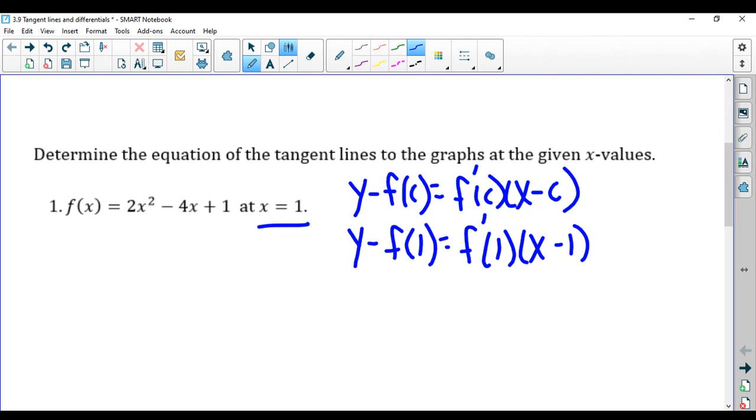Now we just have to figure out what f of 1 is and f prime of 1 is. So f of 1 is you plug in 1 to this function. So it's 2 times 1 minus 4 times 1 plus 1 which equals negative 2 plus 1 which is negative 1.